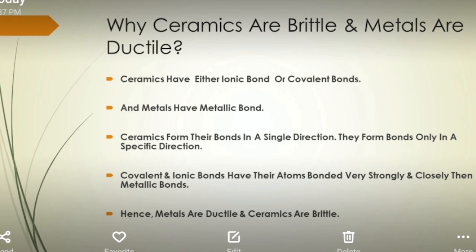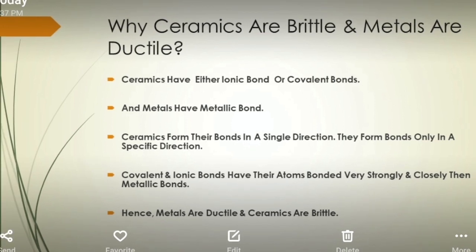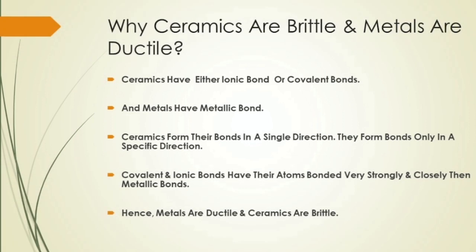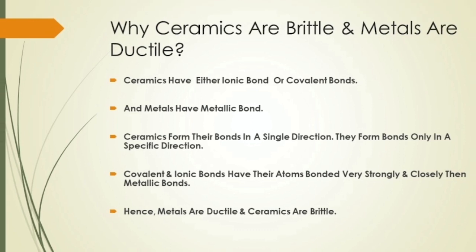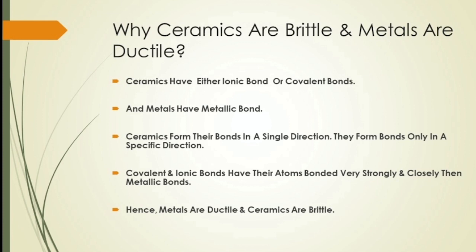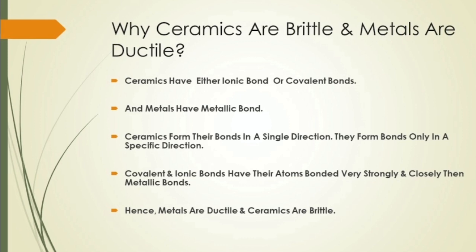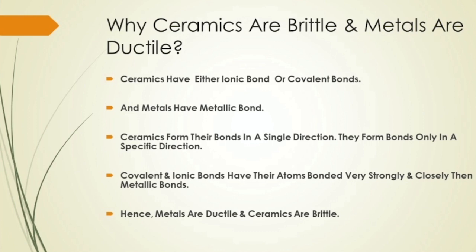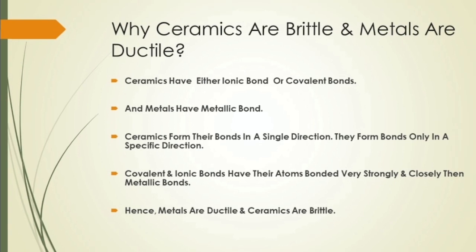Most ceramics are made up of two or more elements, and this is called a compound. For example, aluminium oxide Al2O3 is a compound made up of aluminium atoms and oxygen atoms. The atoms of ceramic materials are held together by a chemical bond, and the most common chemical bonds for ceramic materials are covalent and ionic. For metals, the bond is metallic bond. The bonding of atoms together is much stronger in covalent and ionic bonding than in metallic bonding.